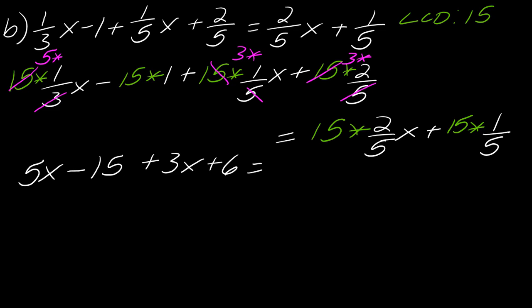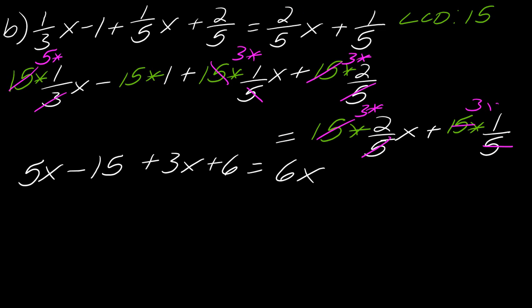Moving on to the other side: five goes into fifteen three times, so I'm left with three times two x, which is 6x. Then five goes into fifteen three times, and three times one is just 3.